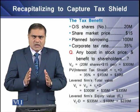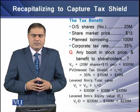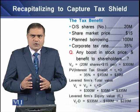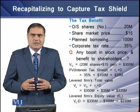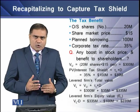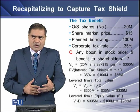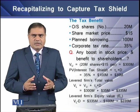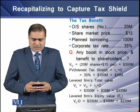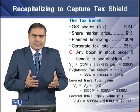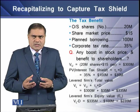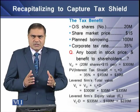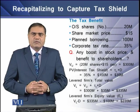Since the firm is unlevered, the value of this unlevered firm is the product of its number of shares and the share market value, which equals $300 million. If the firm issues new debt, there will be interest payments and accordingly an interest tax shield. The present value of this interest tax shield is simply the product of the corporate tax rate and the debt value, equal to $35 million.